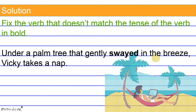Now back to our original example and the solution. Look at the bold verb 'swayed.' It is written in the simple past tense, so we know that Vicky's rest also took place in the past.